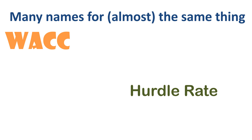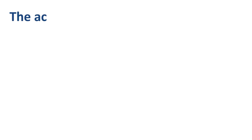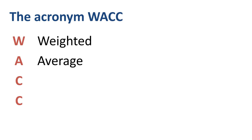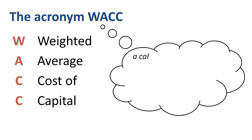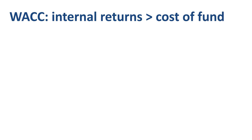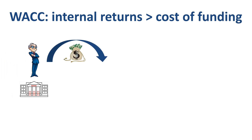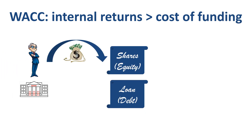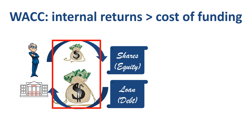It's best to start with WACC, as the hurdle rate is merely a variation of WACC. The WACC is the weighted average cost of capital — a calculation of a firm's cost of capital in which each category of capital is proportionally weighted. Investors buy shares and banks supply loans to make a return; the required rate of return for all types of capital combined is the WACC.